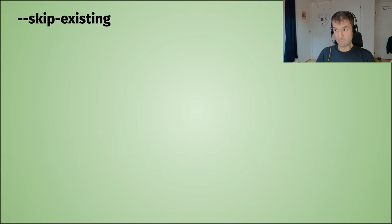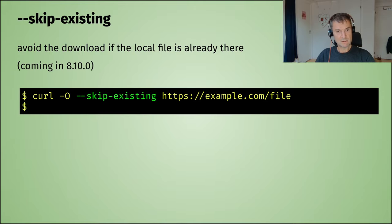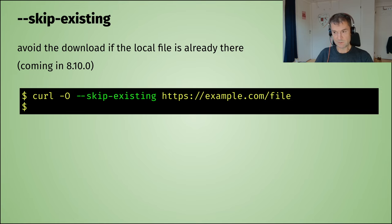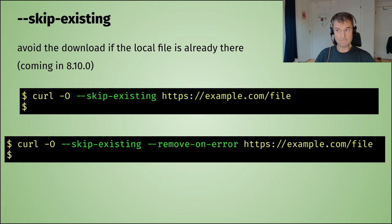--remove-on-error is really convenient in combination with a brand new option coming in the next release: --skip-existing. This means: skip the download if the target file is already present on disk. So if a file called 'file' already exists and you ask curl to skip existing, it's done immediately — no transfer. The perfect combination might be --skip-existing and --remove-on-error together.